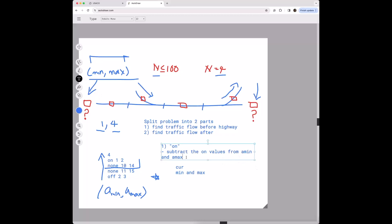So now that we know this, let's update our thing. So we're going to subtract cur_min from a_max and cur_max from a_min. So like with this we're going to obtain the maximum and minimal values from the on ramp.